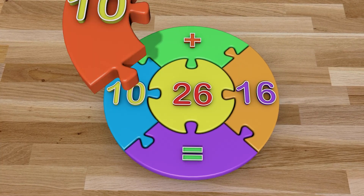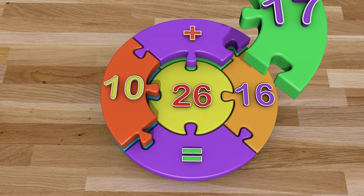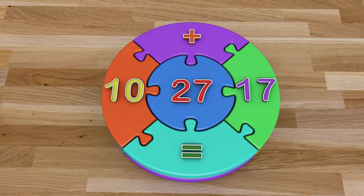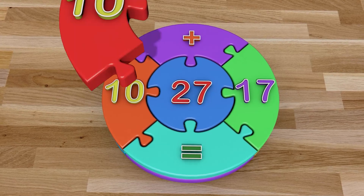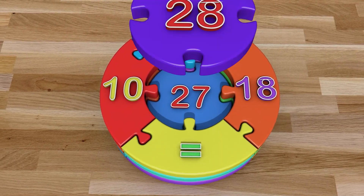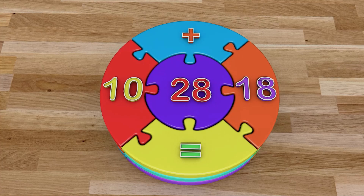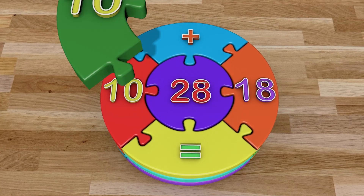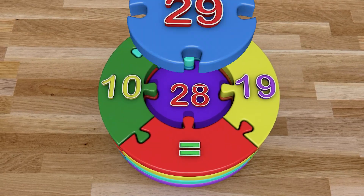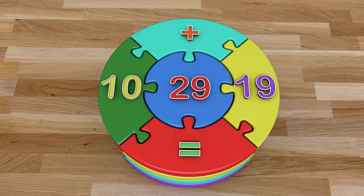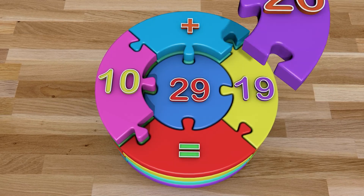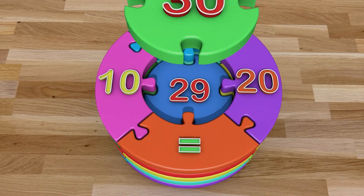10 plus 17 equals 27. 10 plus 18 equals 28. 10 plus 19 equals 29. 10 plus 20 equals 30.